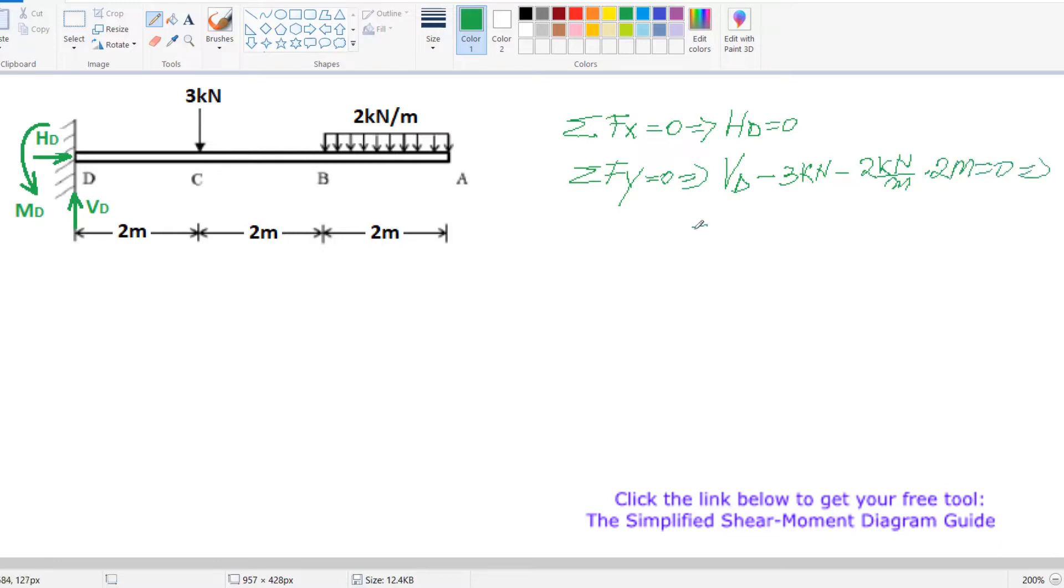From here it results that VD equals 3 kN plus 4 kN equals 7 kN. So our VD equals 7 kN.